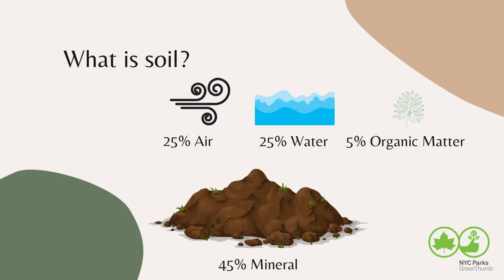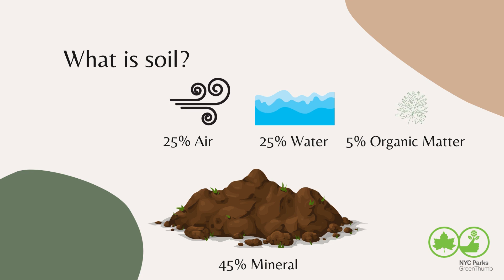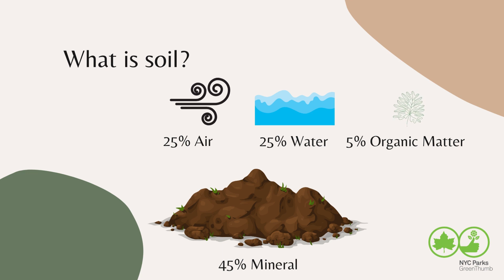In an ideal situation, soil is actually only around 50 percent solid material like minerals and organic matter, and 50 percent pore space for air and water. This leaves space for roots to grow, water to flow, soil life to live, and gas exchange.